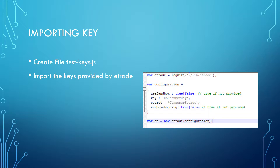At this time go ahead and create a file called test-keys.js. In this file we're going to import the consumer key and then consumer secret. Go ahead and create the three variables provided on the screen. The first one is etrade — we're going to set that to the library. Next is called configuration — this is where we're going to set the sandbox mode, consumer key, consumer secret, and verbose logging. The last variable we're going to set is 'et', and that's going to be equal to our configuration that we have set up.